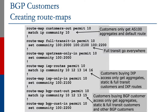For the IXP routes, we are not setting anything, but we are making sure that we match community lists 10, 12, 13, 14, and 16, which are the customers buying IXP access only. They only get our aggregates, they get the statics which are out of the aggregates, and they get full transit customers and IXP routes.